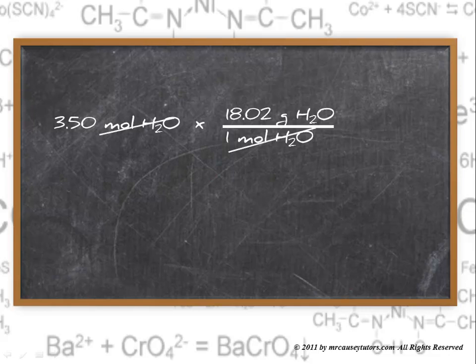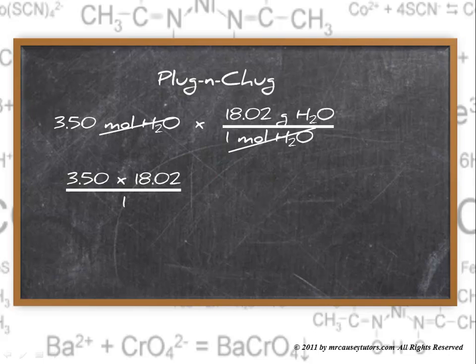We'll take the 3.5 moles and multiply it by the conversion, which is 18.02 grams of water per one mole of water. Cross out the units, do the math, plug and chug. And voila. We've got three sig figs at 63.1 grams H2O.